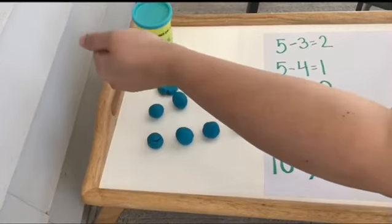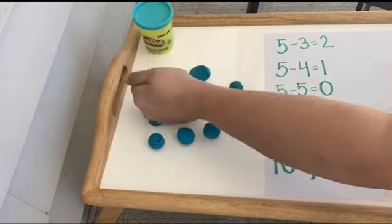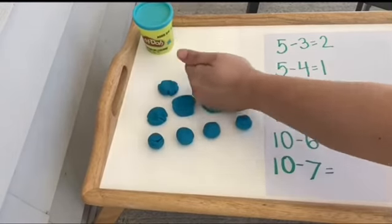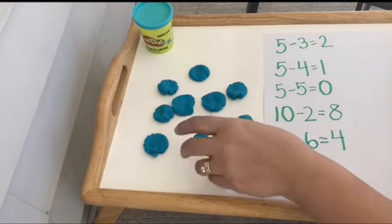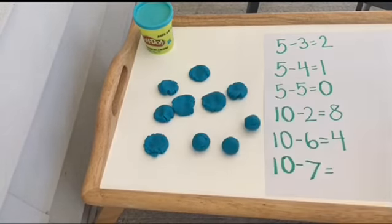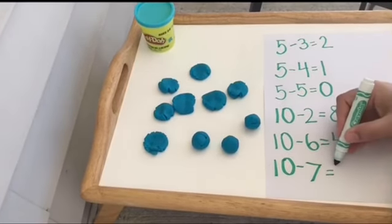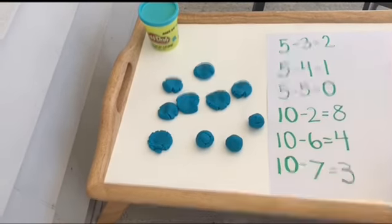1, 2, 3, 4, 5, 6, 7. Oh, these are left. 1, 2, 3. 10 minus 7 equals 3.